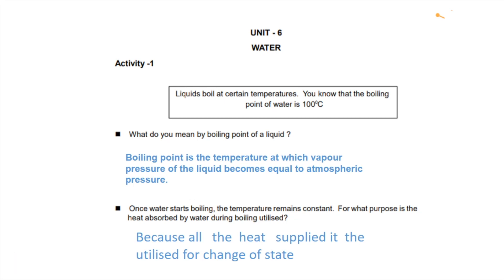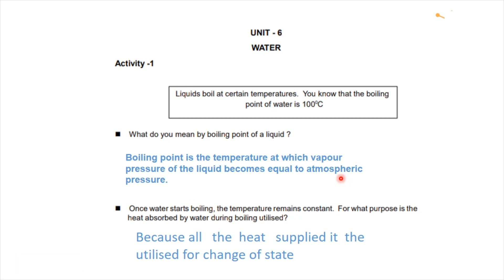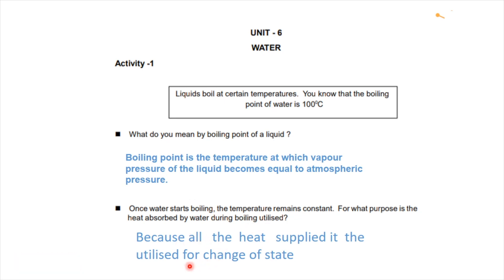We are talking about boiling point. Boiling point is the temperature at which the vapor pressure of a liquid becomes equal to atmospheric pressure. Once water starts boiling, the temperature remains constant. The heat absorbed by water during boiling is utilized for the change of state, from liquid to vapor.